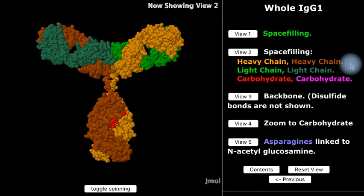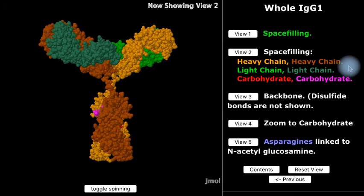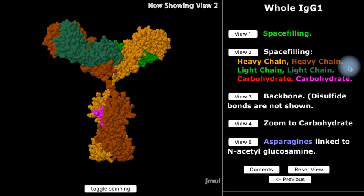Here we see the two identical heavy chains and the two identical light chains fitting together to make the whole IgG1 molecule.